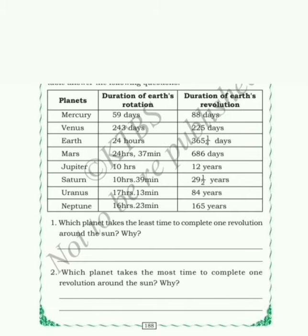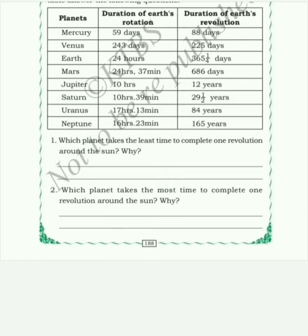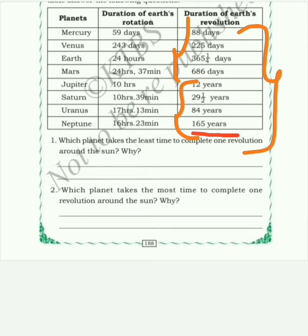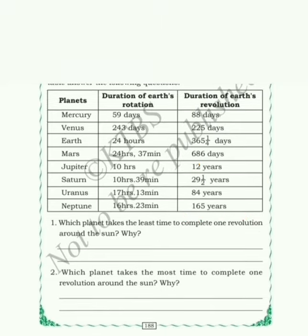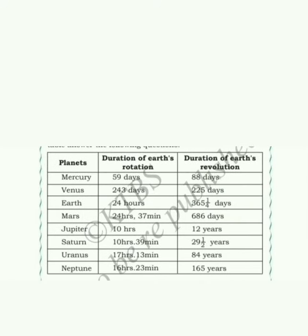Second question: Which planet takes the most time to complete one revolution around the sun? Looking at the revolution column, the last four planets are measured in years. Neptune takes 165 years — the greatest of all. So the correct answer is Neptune.